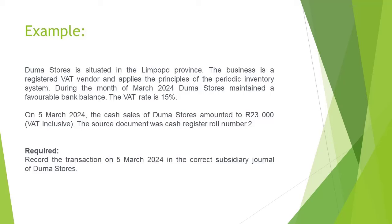On 5 March 2024, the cash sales of Dumas Stores amounted to R23,000, VAT inclusive. The source document was the cash register roll number 2. We are required to record this transaction in the correct subsidiary journal of Dumas Stores.